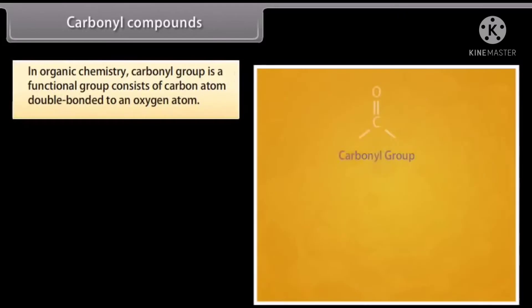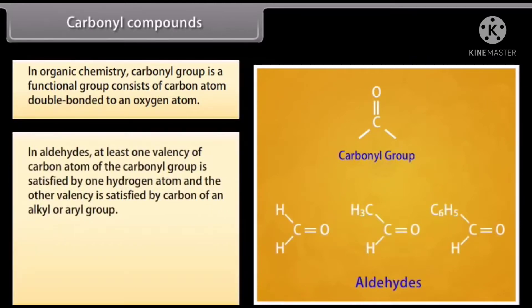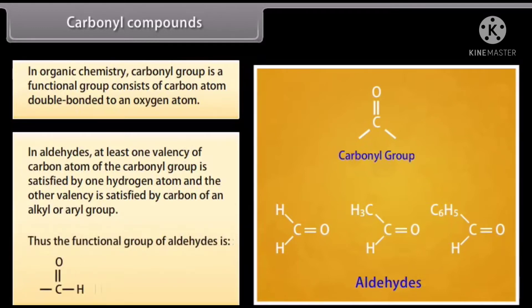In organic chemistry, the carbonyl group is a functional group consisting of a carbon atom double bonded to an oxygen atom. In aldehydes, at least one valency of the carbon atom of the carbonyl group is satisfied by one hydrogen atom, and the other valency is satisfied by carbon of an alkyl or aryl group. Thus, the functional group of aldehydes is CHO.